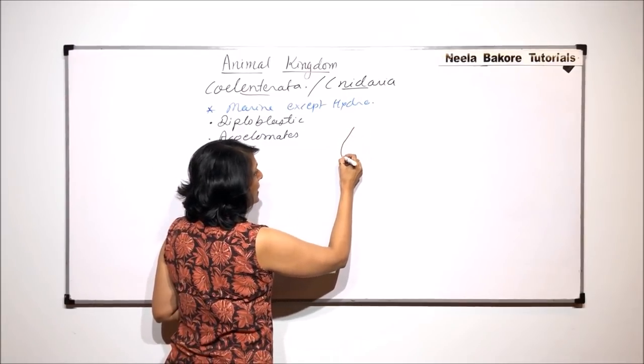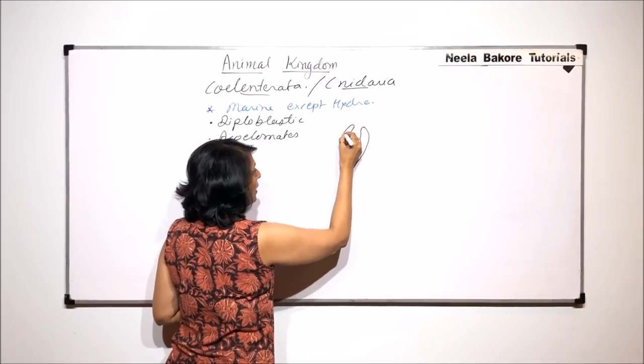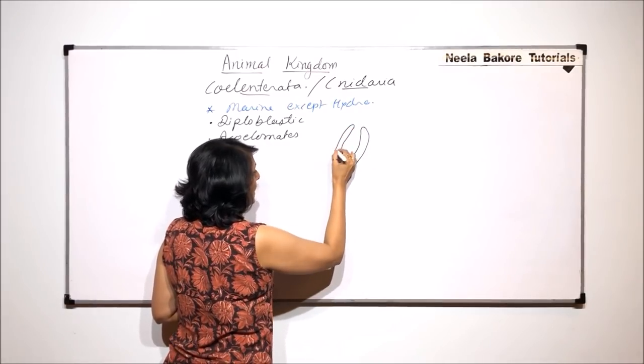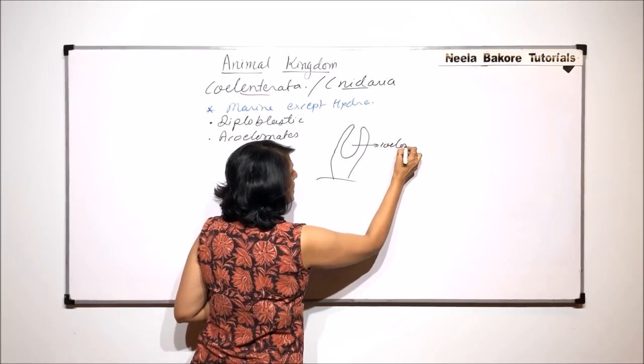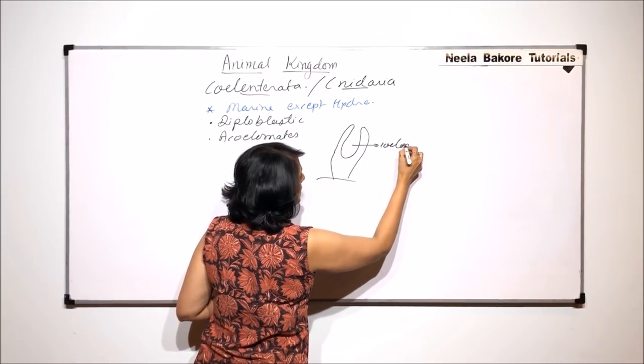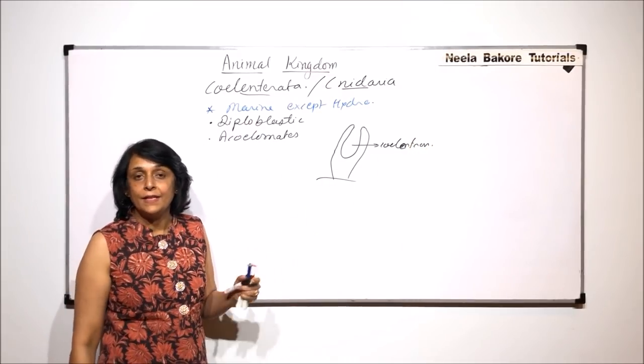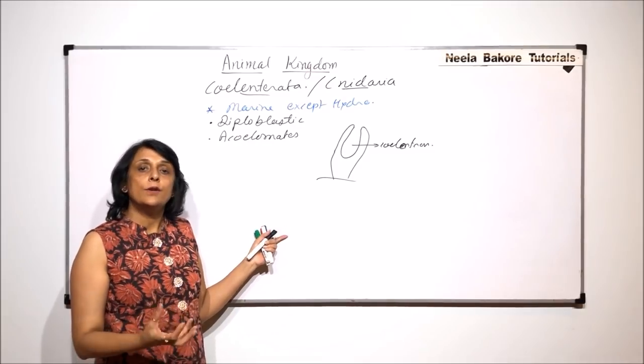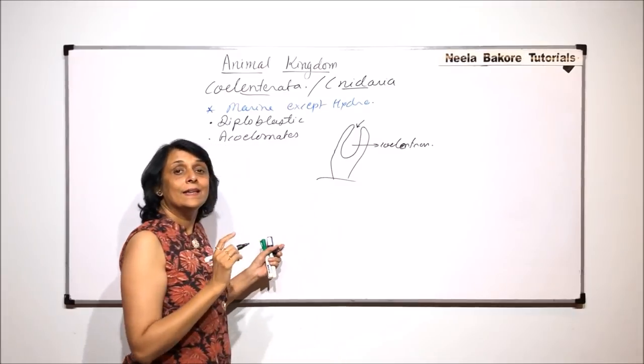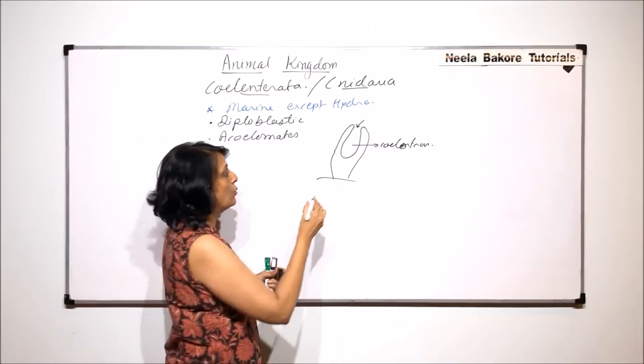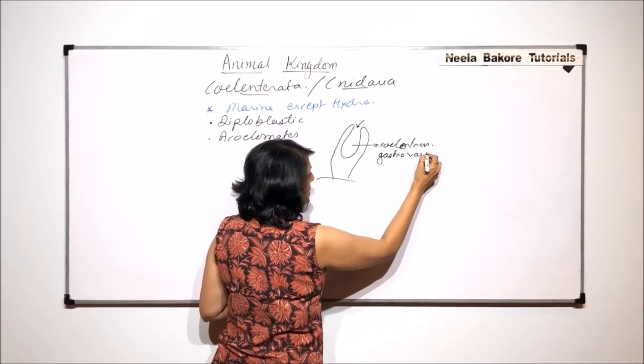If we talk about Hydra, then there is a cavity here and this is the body which is normally attached to a substratum. This cavity is called coelenteron. Coelenteron acts as a gastrovascular cavity. It allows the entry of food and everything. This opening would act as the inlet point as well as outlet. So this acts as gastrovascular cavity.